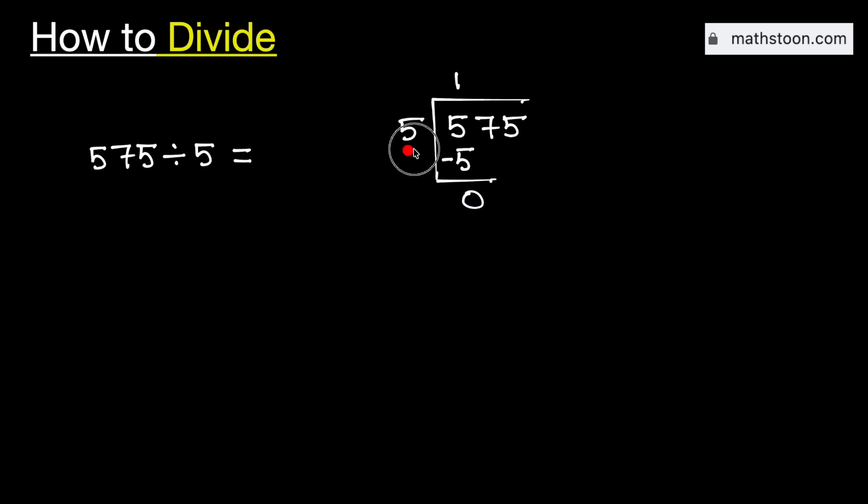As 0 is less than 5, that is why we need to bring down this adjacent 7 here. And we know that this is the number 7, so we can remove this 0.